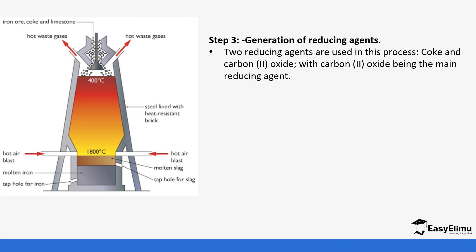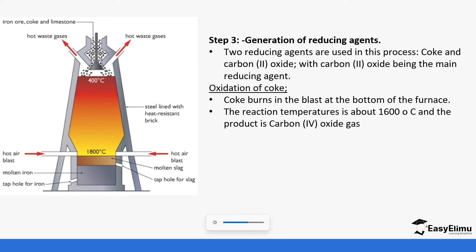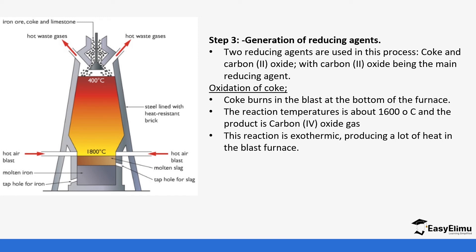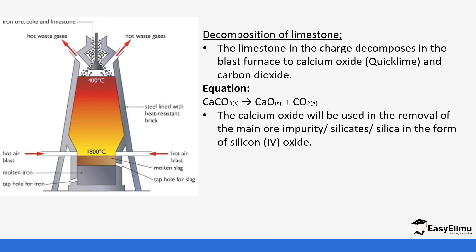The two reducing agents used in this process are coke and carbon monoxide, with carbon monoxide being the main reducing agent. First, coke is burnt at the bottom of the furnace, producing carbon dioxide. This is a very exothermic reaction and causes temperatures to increase to around 1600 degrees Celsius. Limestone is also decomposed in the blast furnace to give calcium oxide and carbon dioxide. The calcium oxide is used to remove impurities — it reacts with silica to form calcium silicate.